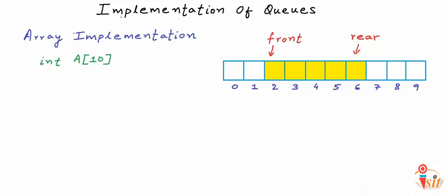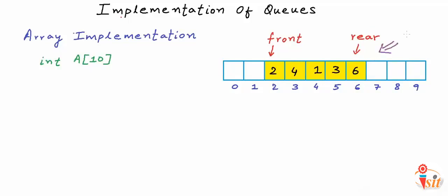To insert an element — enqueue — we increment rear, adding a new cell at the rear end, and write the new value there. I'll fill in some values: say we want to insert number 5. We increment rear, provided there is an available empty cell to the right, and write value 5 there. After insertion, the new rear index is 7 and the value at index 7 is 5.